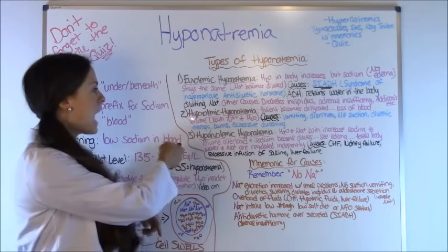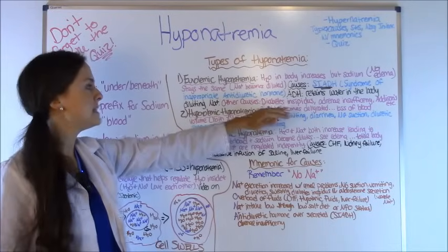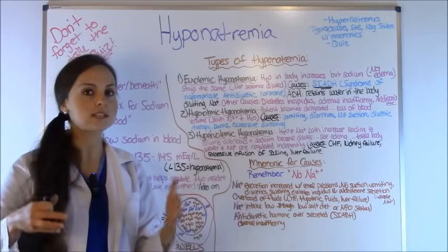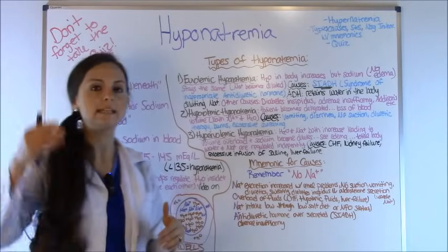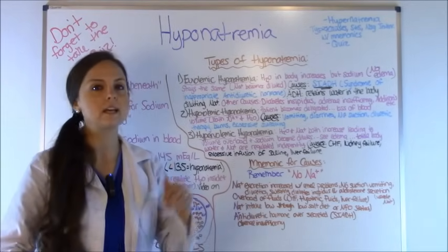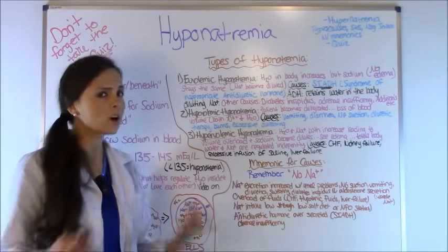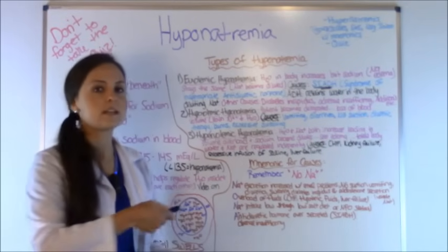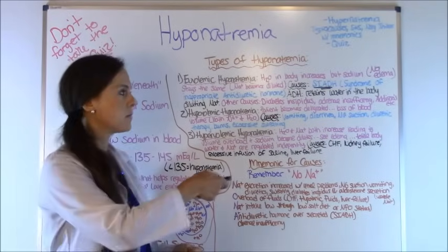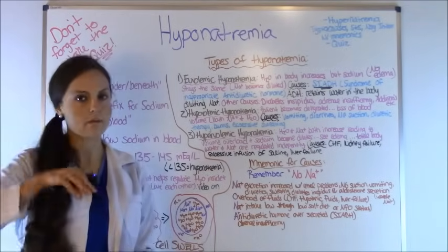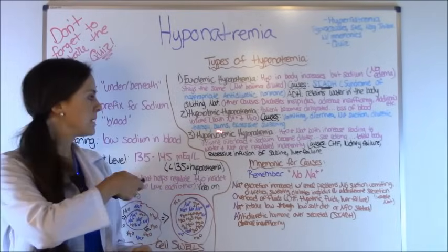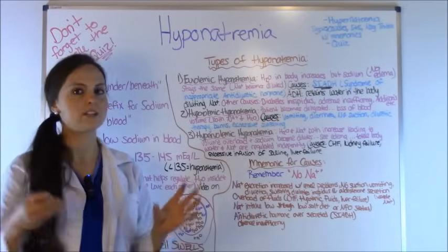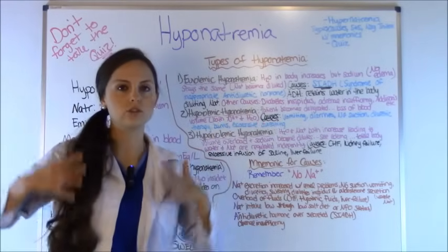The second type is hypovolemic hyponatremia. This is where your patient becomes dehydrated — they have a loss of blood volume, so you're seeing a decrease in both sodium and water. Common causes include vomiting, diarrhea, NG suction (your GI secretions are really rich in sodium, so continuous NG suction causes a lot of sodium loss), diuretic therapy, burns, and excessive sweating. The patient is becoming dehydrated and losing both water and sodium.